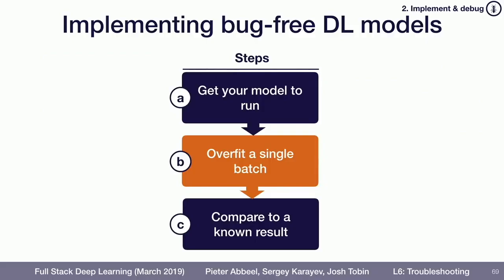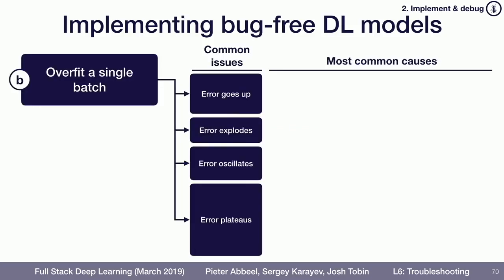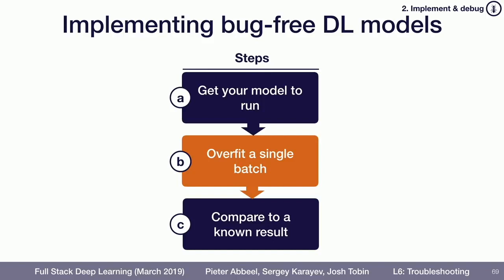Once things are running — once you can actually run training and your loss starts to move — the next thing to do is to try to overfit a single batch of data. In my experience, this is a heuristic that catches an absurd number of bugs. What this actually means is it's not just that you want loss to go down on a single batch, but you really want to be able to get loss arbitrarily close to zero on a single batch.